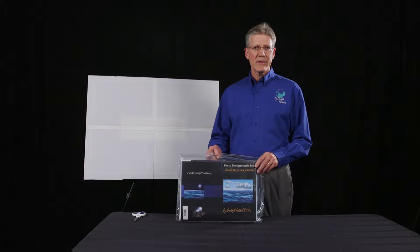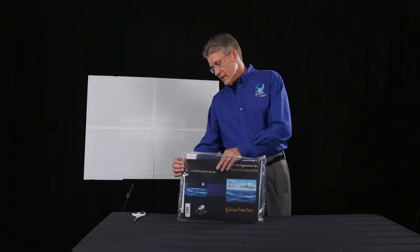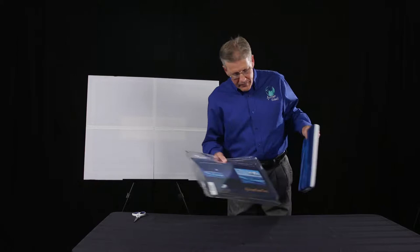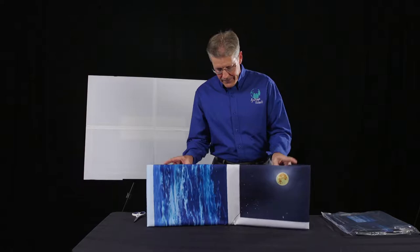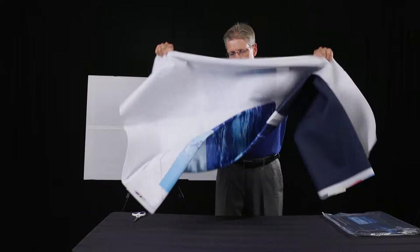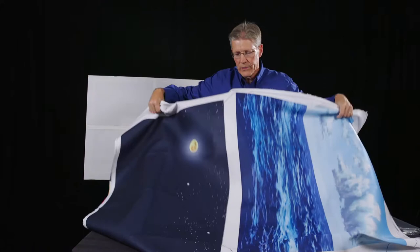What I want to talk about is how to cut out our basic water sky background. You'll find it will be the very first one in your beginner's flannel graph series. You can just take it out of its plastic case, set that aside. Let me just fold this out. It's pretty large, very beautiful.